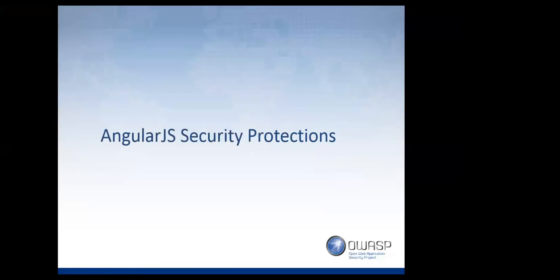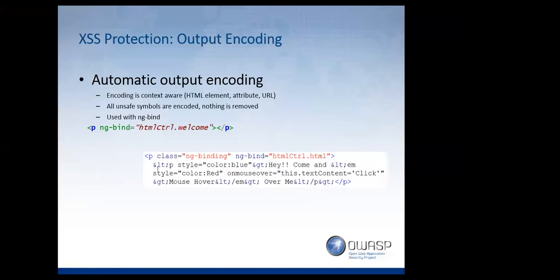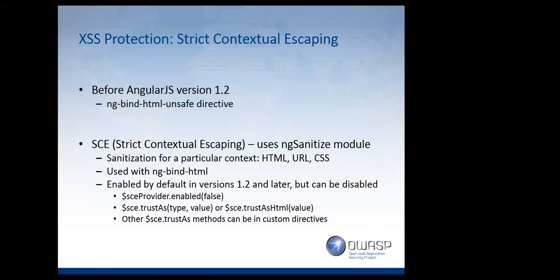AngularJS is quite good when it comes to offering security out of the box. It offers output encoding by default — if you use expressions with curly braces or ng-bind, it automatically output-encodes that data. So if you try to include an onmouseover, it's not going to work. It also offers HTML sanitization. In early versions of AngularJS, before strict contextual escaping was introduced, there was the ng-bind-html-unsafe directive that allowed you to explicitly whitelist data, and before that it would automatically sanitize.